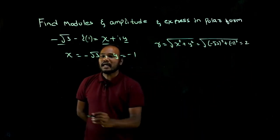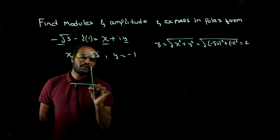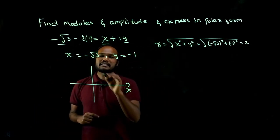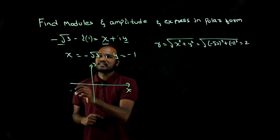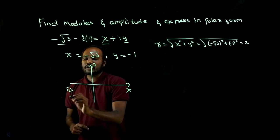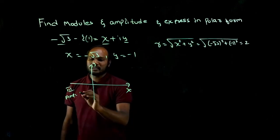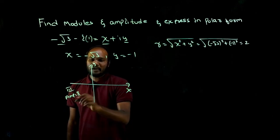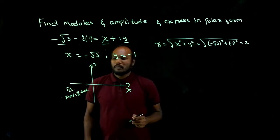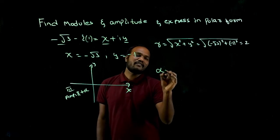Once we got the modulus, next we have to find amplitude. To find amplitude, we have to know the quadrant. X is negative, y is also negative. This is third quadrant. In third quadrant, amplitude will be equal to pi plus alpha. This is the amplitude formula.